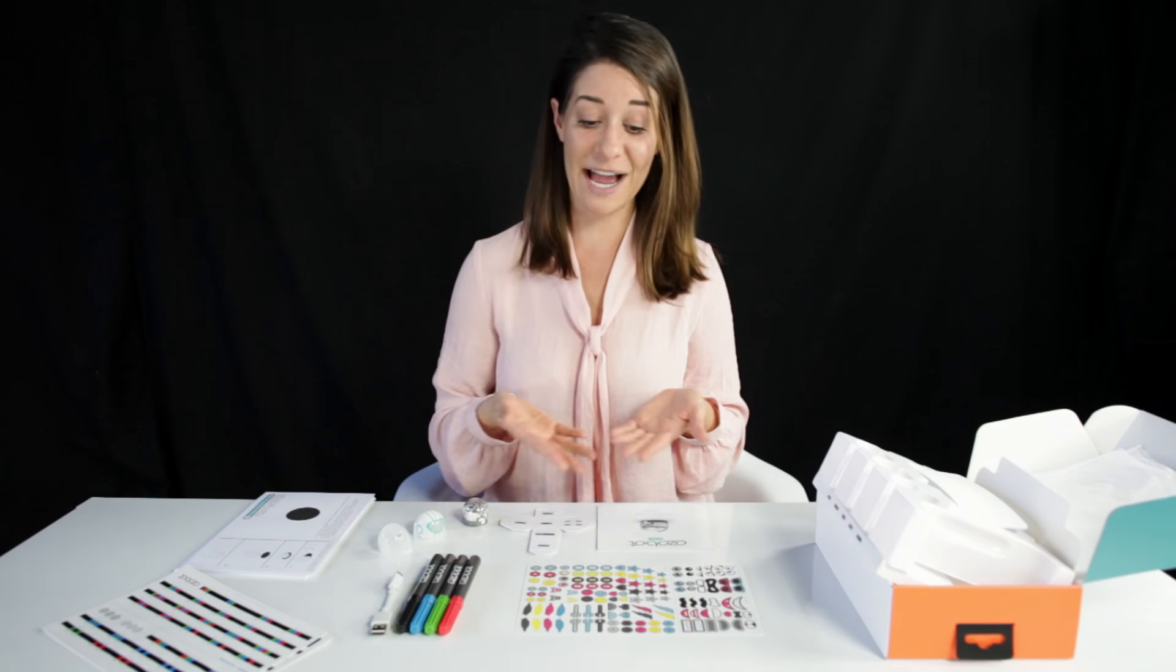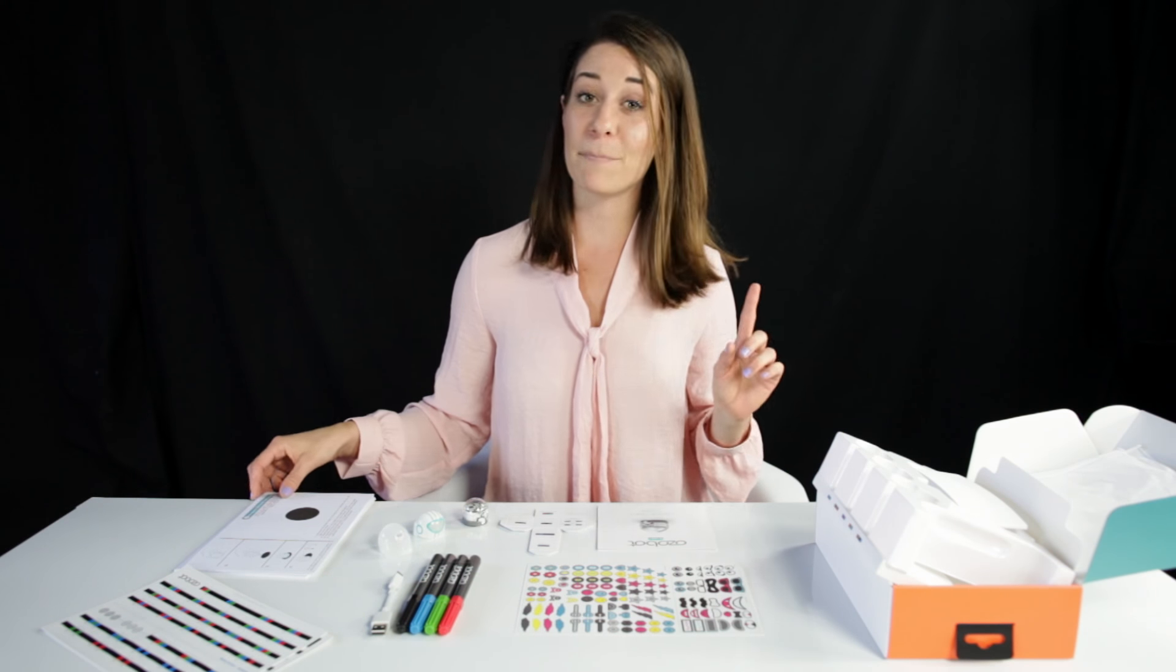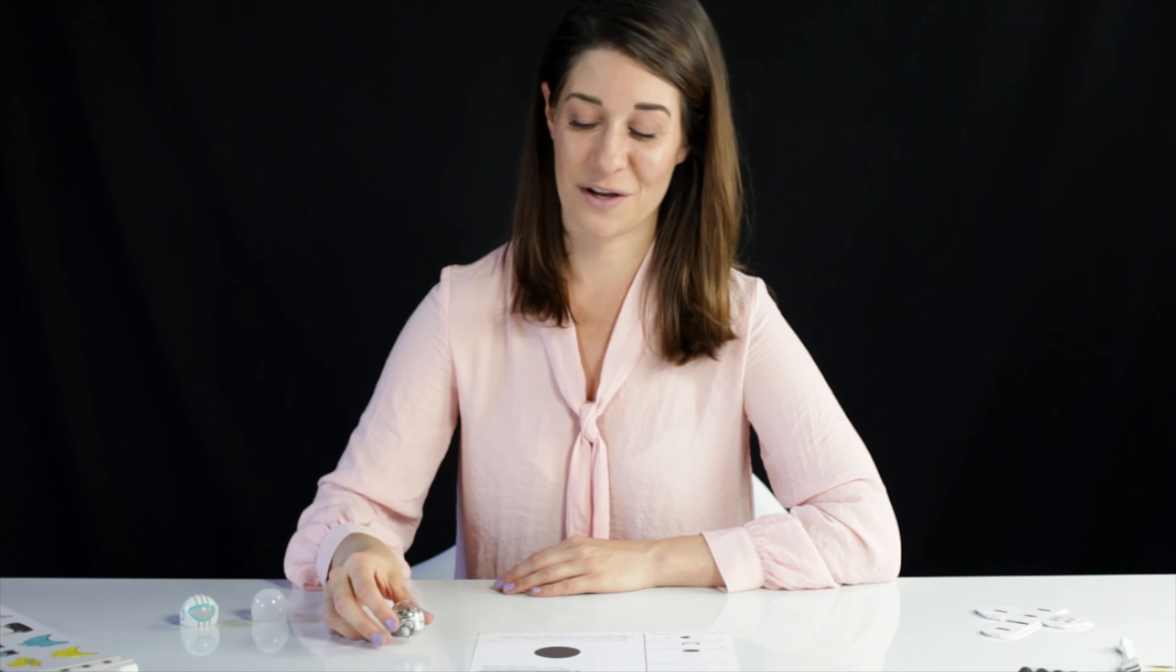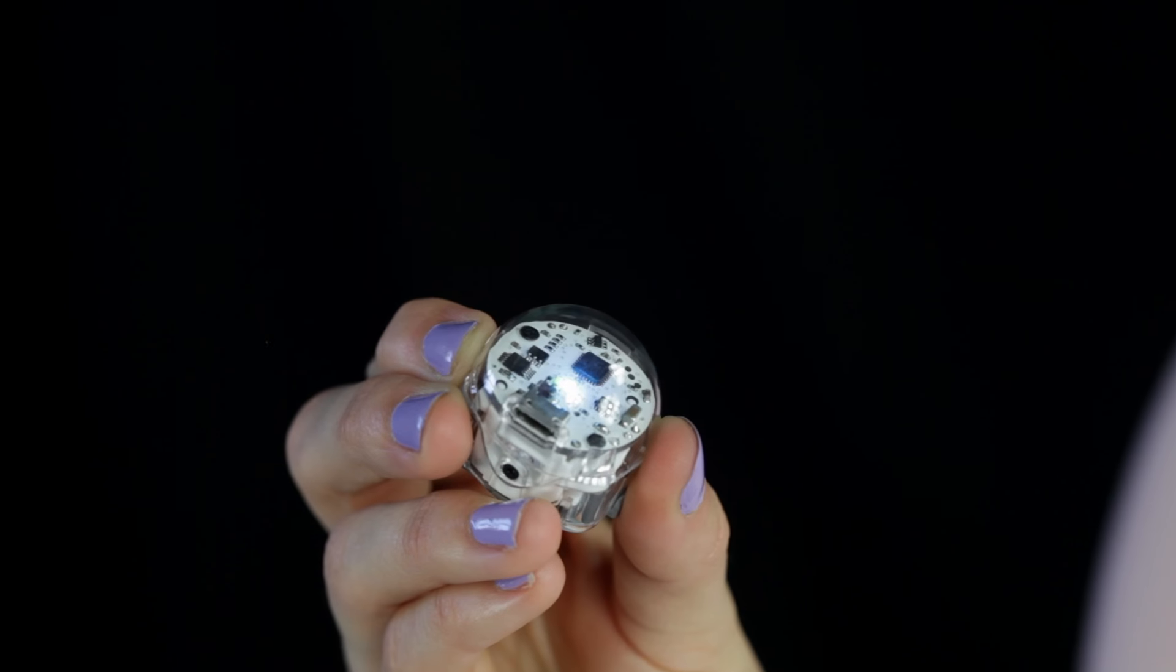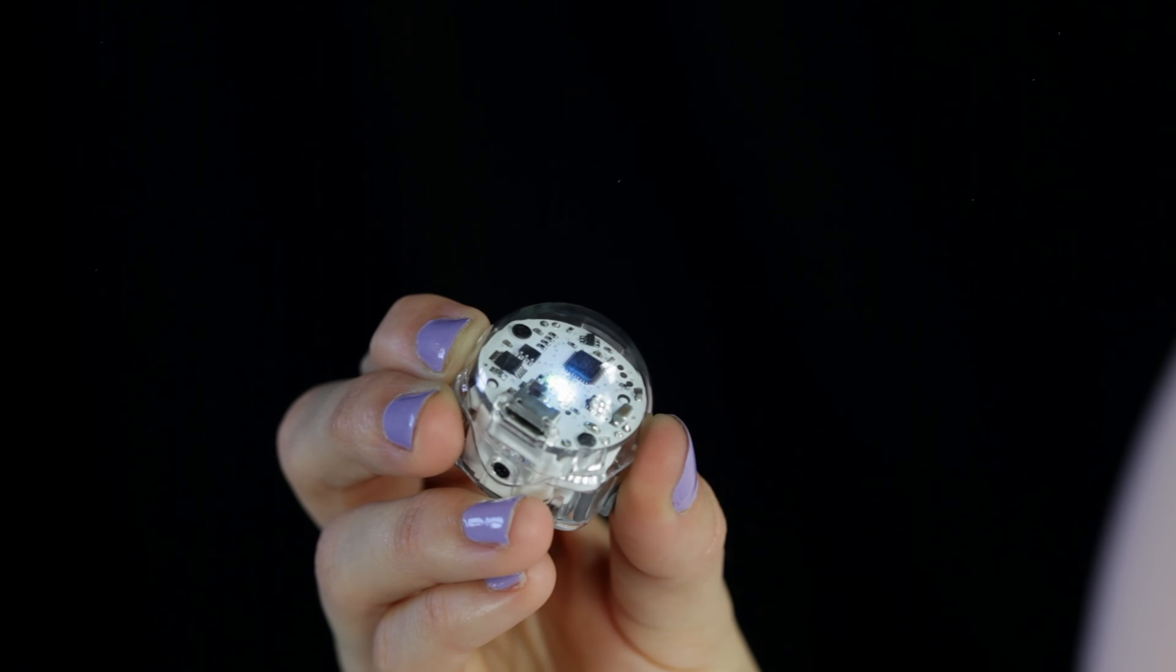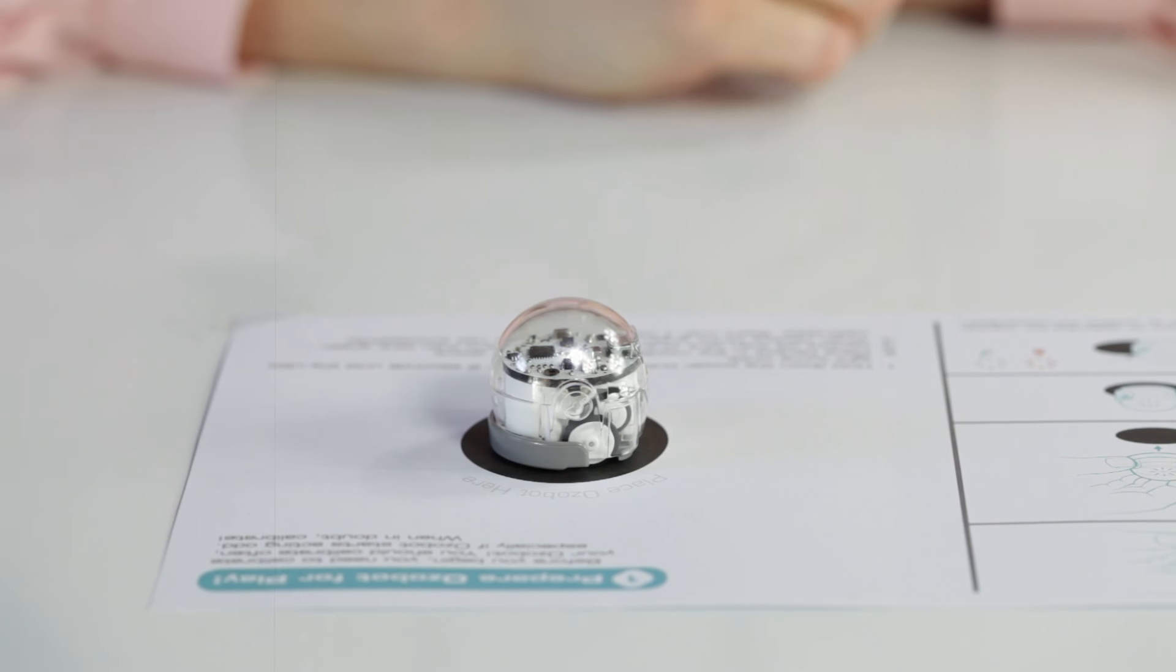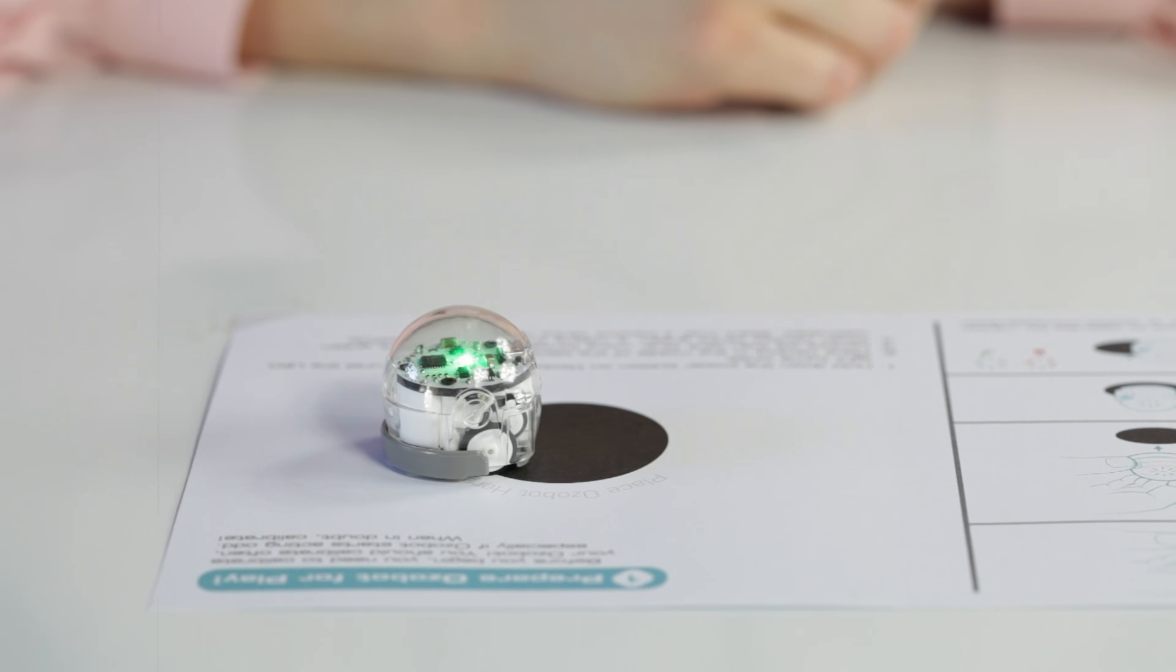As you can see, we have plenty of stuff to play with, but remember, it's always very important to start with calibration. To calibrate your Ozobot, hold down the power button for two seconds until the light turns white, and then place it on the black dot. Ozobot will then blink blue, move forward, and then blink green. When Ozobot blinks green, it means that it has successfully calibrated.